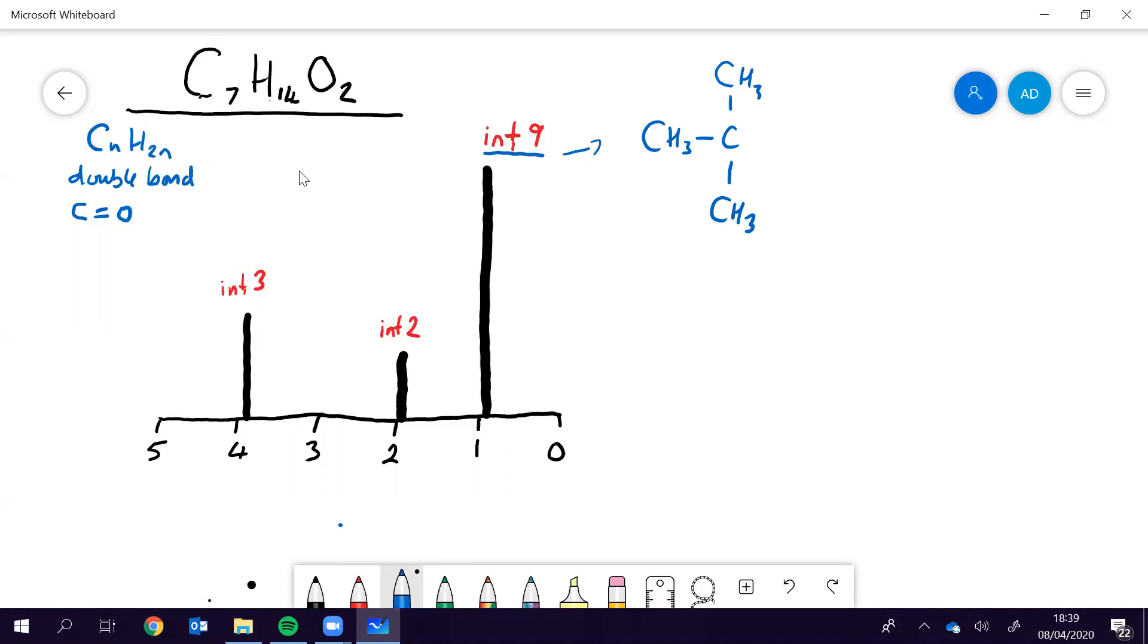Right, what else we've got? We've got this integrated value of two, that is probably a CH2 group, and from the PPM value, which is about two, it is probably next to a carbonyl group.